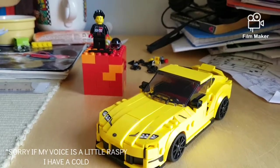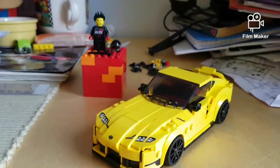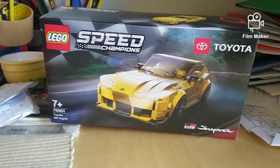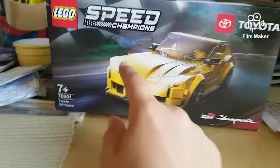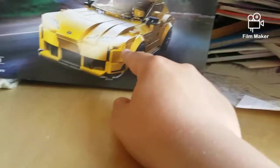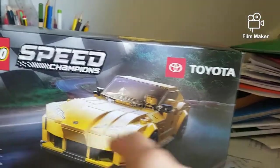This is a speed build and review of the Toyota GR Supra. Starting off with the box here, you got the LEGO Speed Champions logo, a nice picture of the Toyota driving at night time down a nice road, that's pretty good. Then we got the Toyota and Supra logo there.